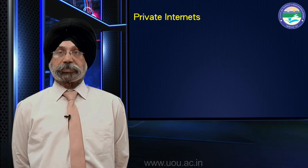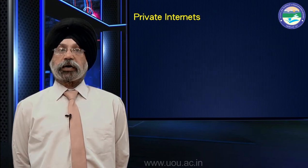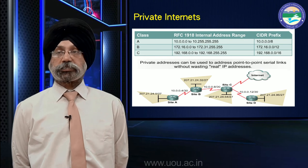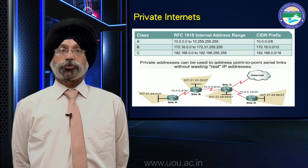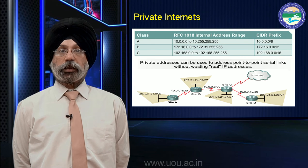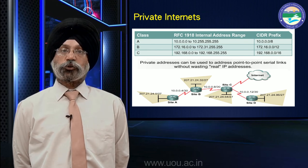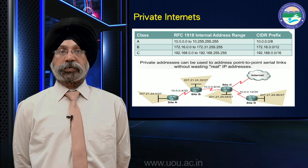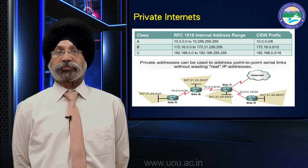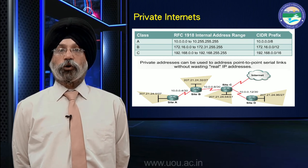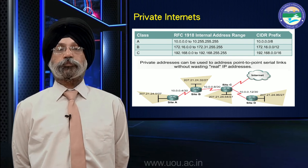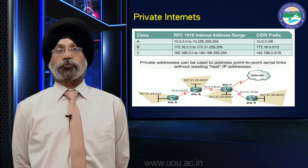Next, we come to private internets, also generally called intranets. These are networks within the organization. ISO has designated one network ID in each address class specifically for use as private internets. In class A, the 10.0.0.0 to 10.255.255.255 network is reserved for private use, and these addresses can be used internally without purchasing them.